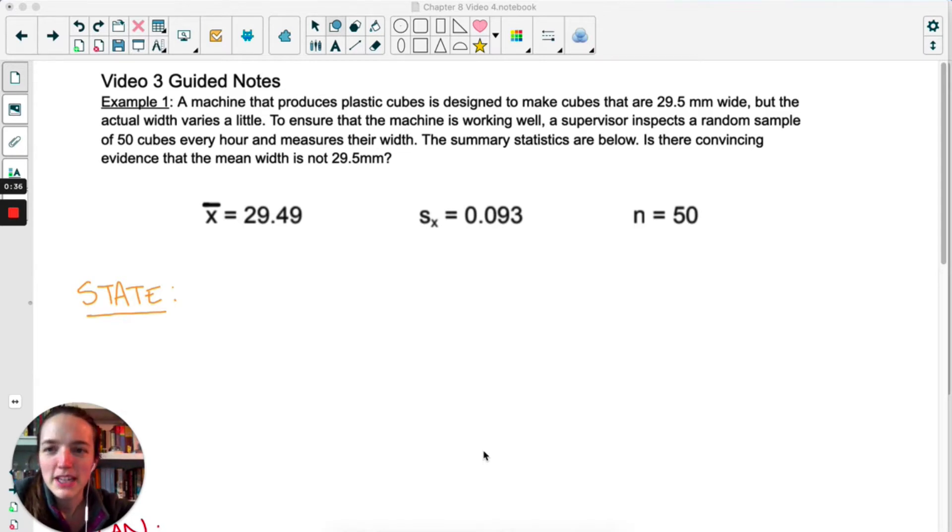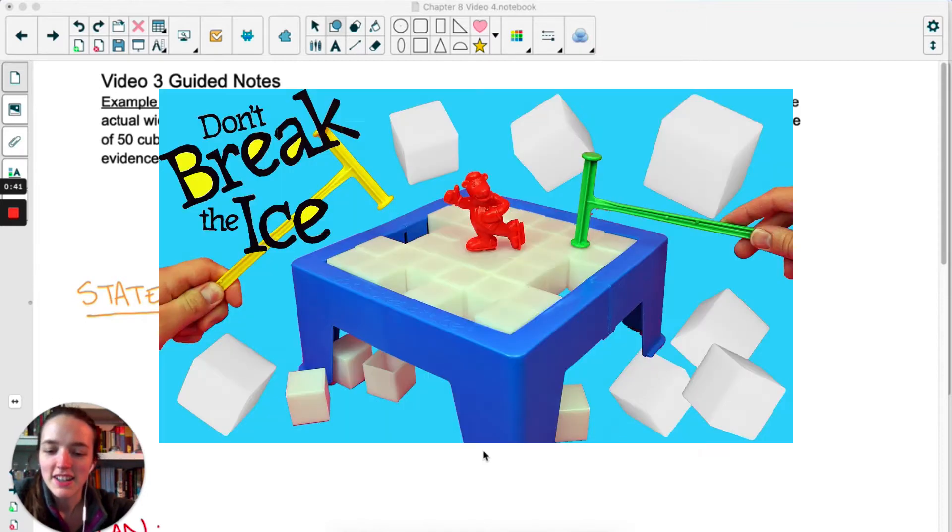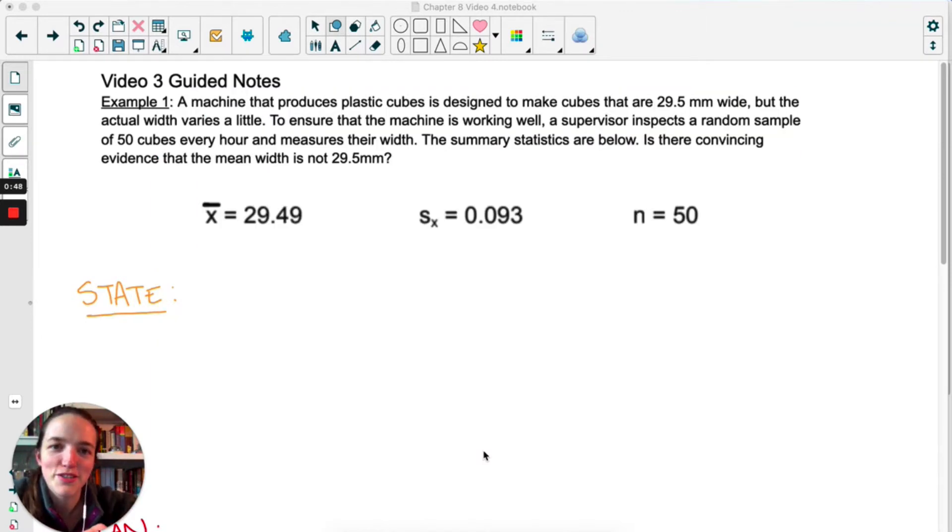Example one here is based on this game that I don't know if they sell anymore, but it was called Don't Break the Ice. You just had these little plastic hammers and you would knock out one ice cube at a time and try not to get the guy to fall.